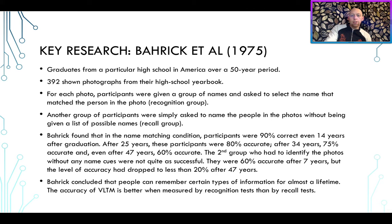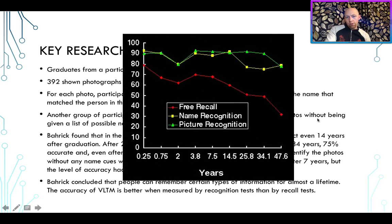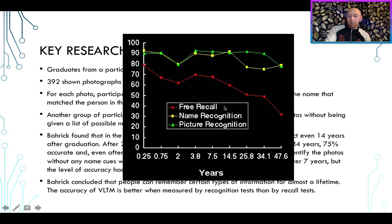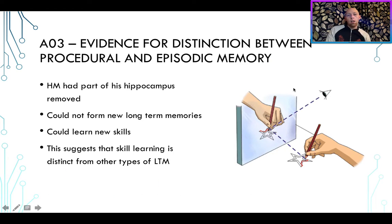Barak concluded that people can remember certain types of information for almost a lifetime, and this is referred to as very long-term memory. Here's a chart showing the nature of different memory systems: the free recall condition, the picture recognition condition where participants had to match up names and faces, and the name recognition condition which involved a list of people in their class.